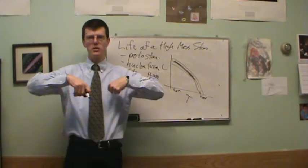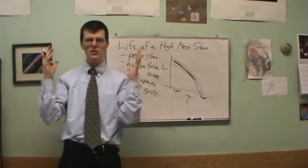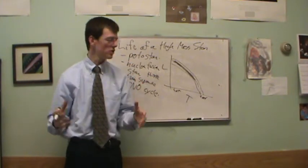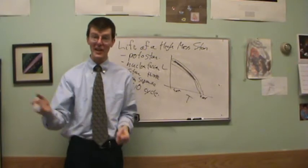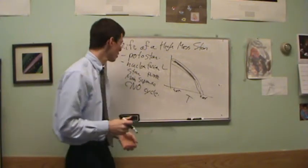They have short lifetimes. Our sun has a main sequence lifetime of 10 billion years. Once you start getting a few times the mass of the sun, now it gets really short. It's less than a billion years. It's down into the hundreds of millions of years, and even shorter.